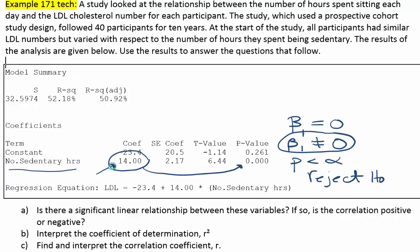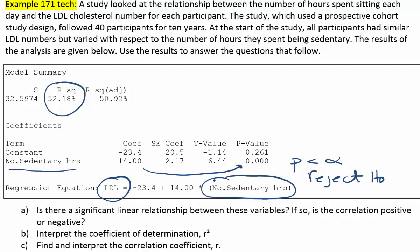Let's look at part B then. It says interpret the coefficient of determination r squared. The value for r squared is 52.18%. What that indicates is that 52.18% of the variation in the y variable, in this case the LDL cholesterol level, can be attributed to or explained by the number of hours spent sitting each day.